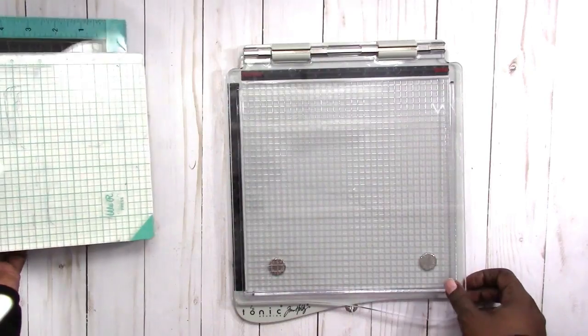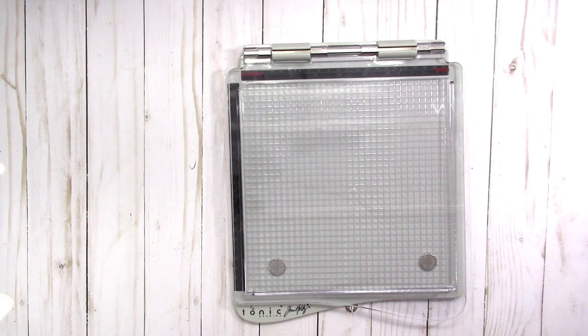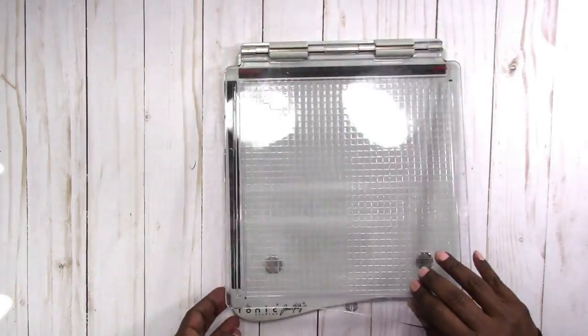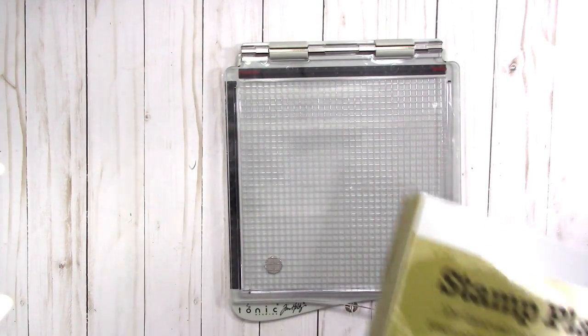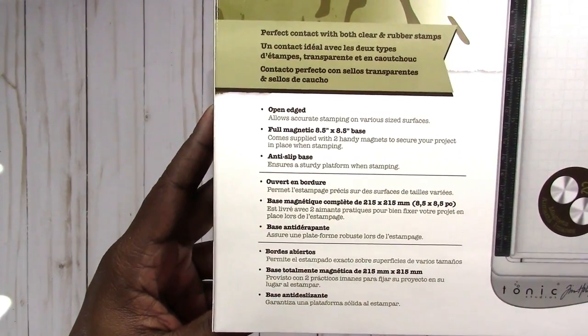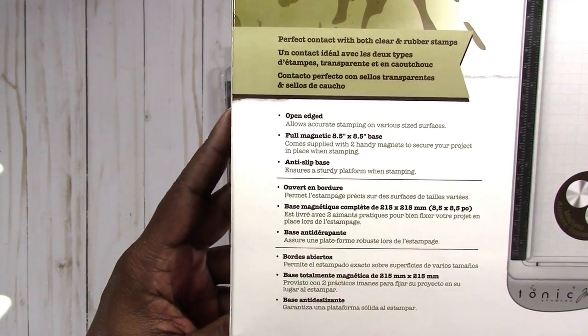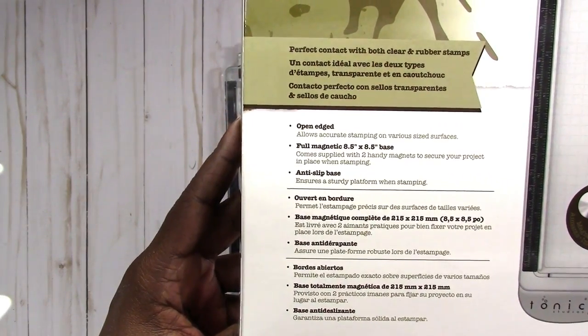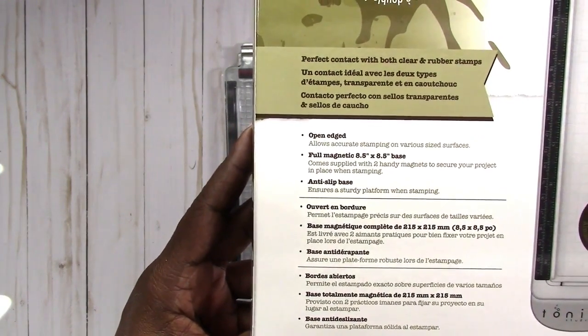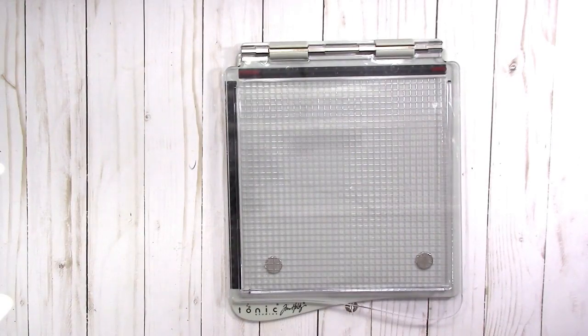And let's just compare sizes. This is the We R Memory Keepers, I'm putting hinge to hinge, and this is the Stamp Perfect. So this is all of them together. So let's now focus on the Tim Holtz stamp platform. So it's pretty big, as you can see. Here are the specs. It's open-edged, allows accurate stamping on various size surfaces. It's full magnetic, eight and a half by eight and a half base, comes supplied with two handy magnets to secure your project in place when stamping. Anti-slip base ensures a sturdy platform when stamping.